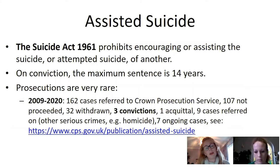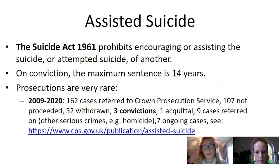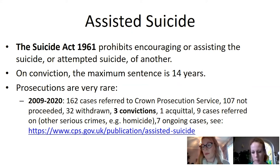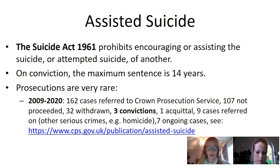You can see some of the data here. In an 11-year period — 2009 to 2020 — 162 cases were referred to the Crown Prosecution Service. Of these, 107 were not proceeded with, meaning the investigation and prosecution were dropped; 32 were withdrawn at a slightly later case stage. There were three convictions, one acquittal, and nine cases were referred on for other serious crimes such as homicide, where something far more sinister was apparent. There are seven ongoing cases, and that data is available on the Crown Prosecution Service website.